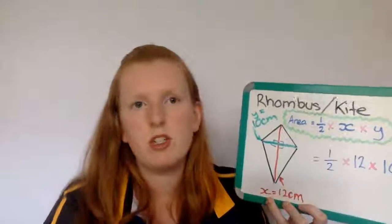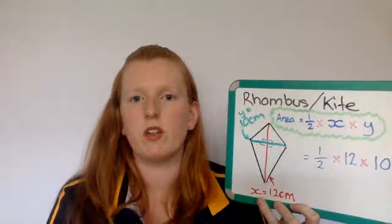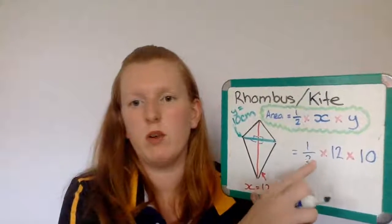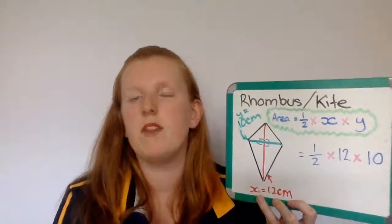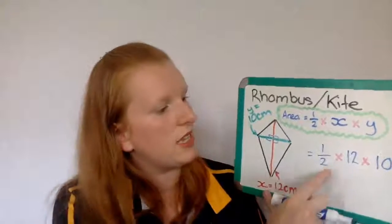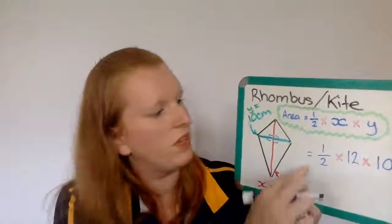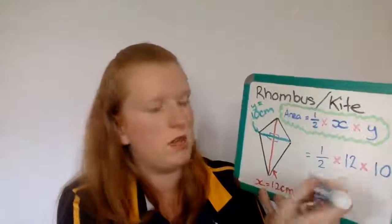Well, there are three different ways, just like when we were doing area of a triangle. You basically pick one of the two numbers to halve, and then multiply it by the last number. So in this case, we'll halve the 12. So half times 12 will give me 6.